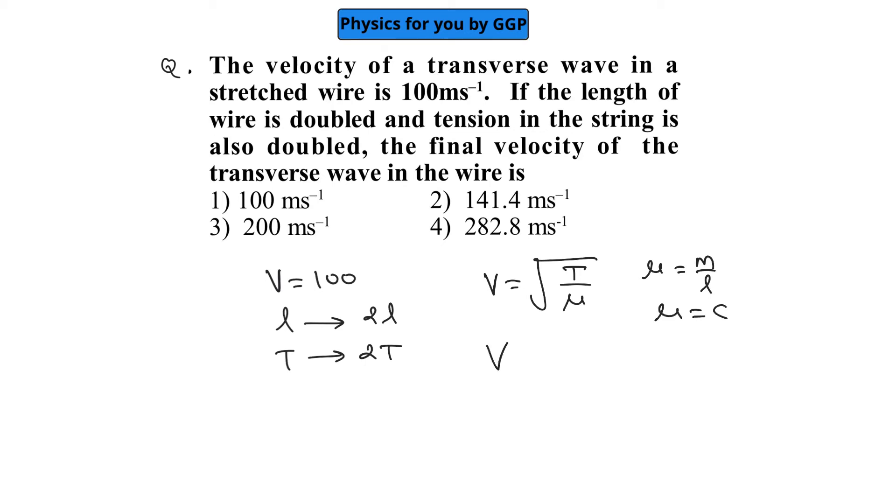In this situation, V is directly proportional to the square root of T. We can write V₂ divided by V₁ equals the square root of 2T divided by T.